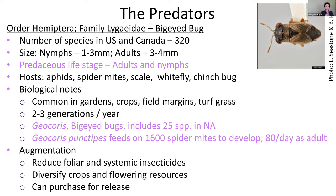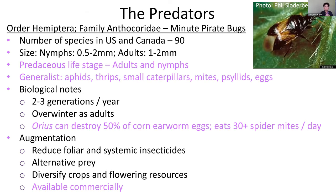Assassin bugs and ambush bugs are another group — predaceous as both immature insects and adults — and they like to feed on aphids, leafhoppers, caterpillars, beetle eggs, and psyllids. The next predator is the minute pirate bug, a very small insect — black and white in color, about one to two millimeters in length. They are really voracious predators, great to have in the landscape, and predaceous in both immature and adult stages.